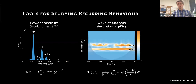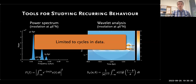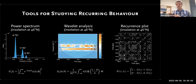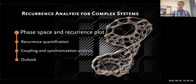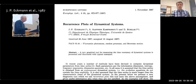This is a fundamental theorem and the foundation of recurrence analysis. There are many tools to study recurring behavior, for example power spectrum and wavelet analysis — two well-known tools. However, these are more limited to studying cycles in data. With recurrence plots, you can study many more aspects, and the idea behind them is actually much simpler than power spectrum or wavelet analysis. The recurrence plot was first introduced in 1987 by Eckmann and colleagues in a small publication in EuroPhysics Letters.